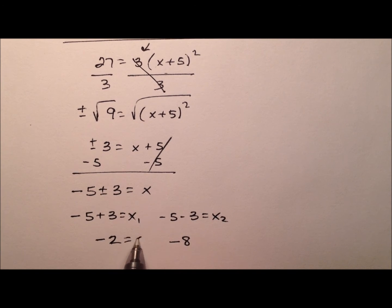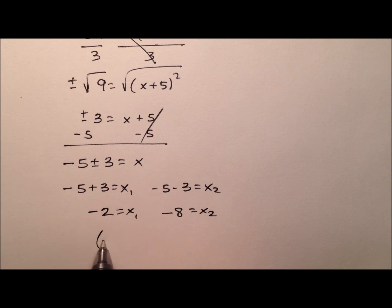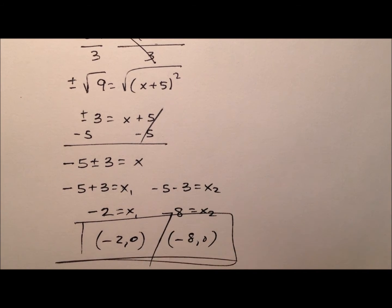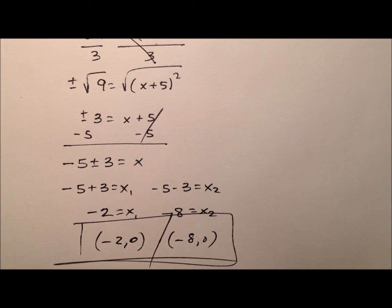So we can write each of those as an ordered pair. So it will be (-2, 0) and (-8, 0). Okay, so here are the two x-intercepts that we're going to have.